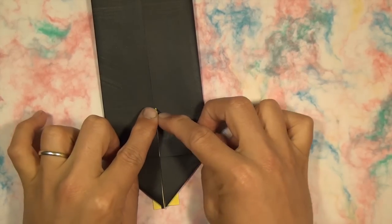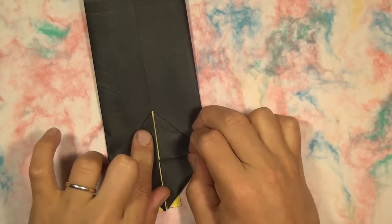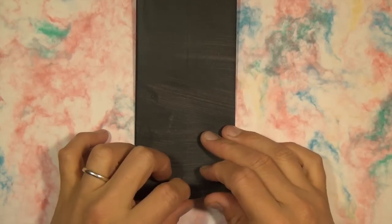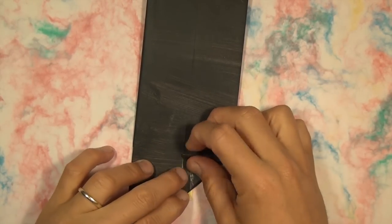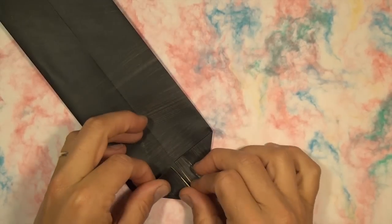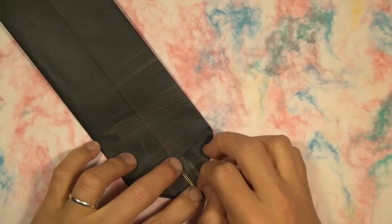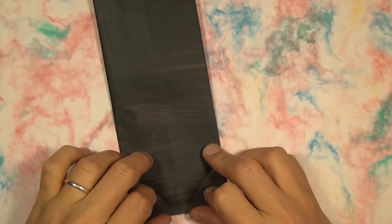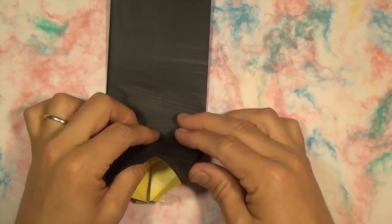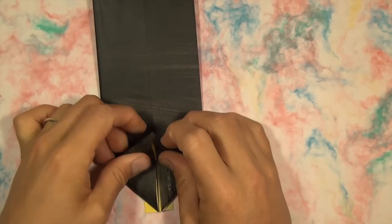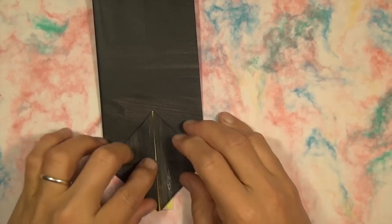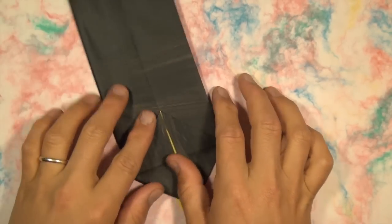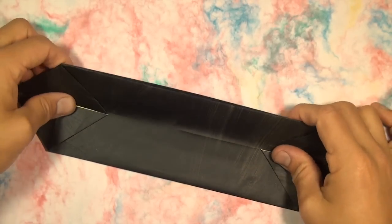And hold up and flatten. Okay, same thing on the other end. I'm going to do a paper plane fold. And fold it up and flatten. Okay. Now let's fold in half again.